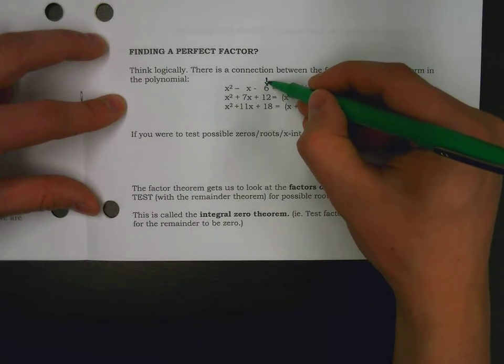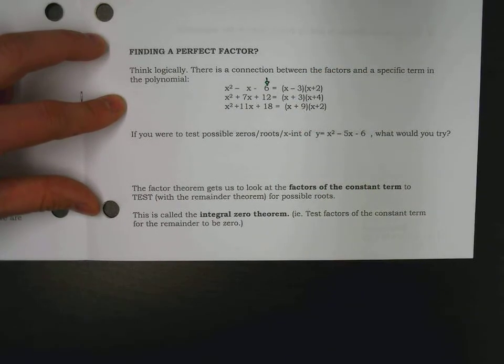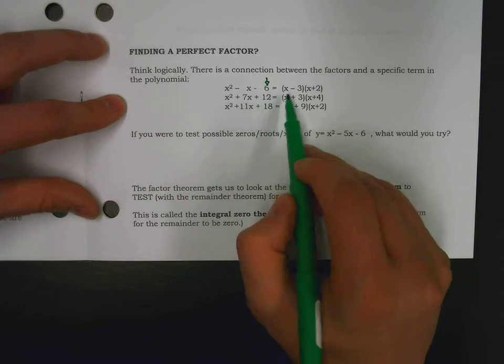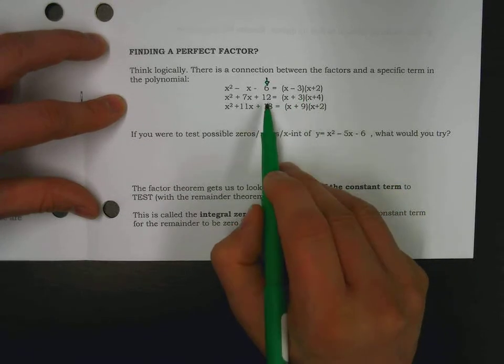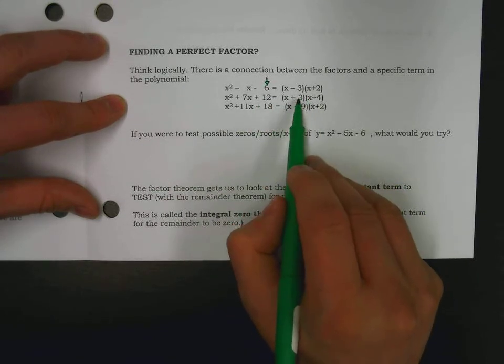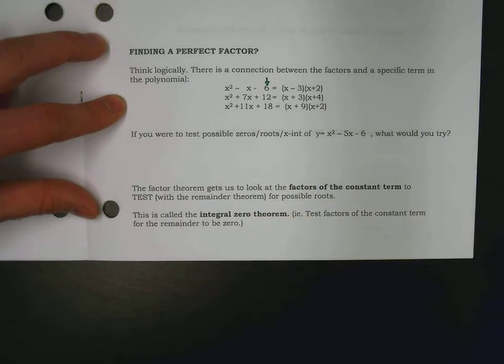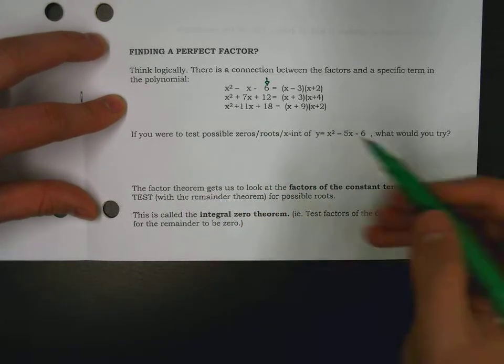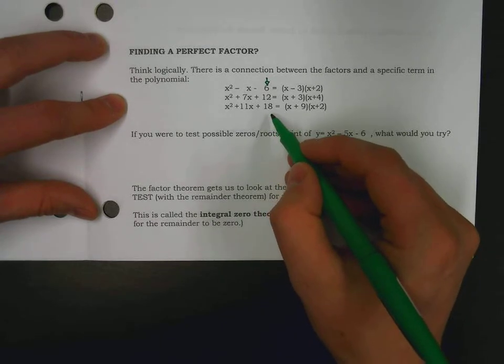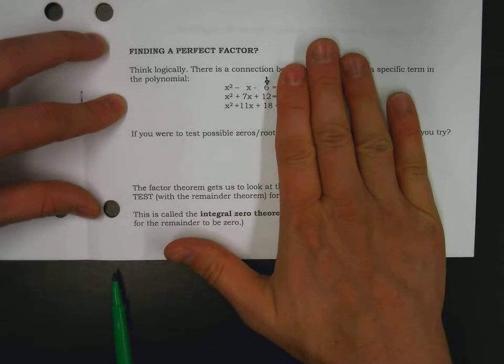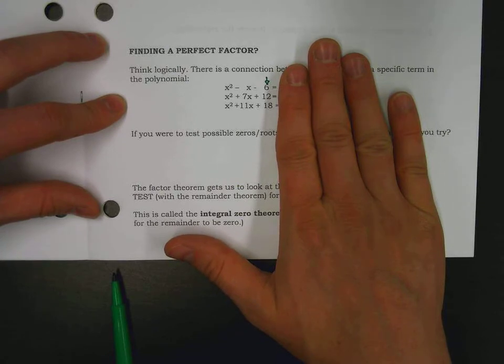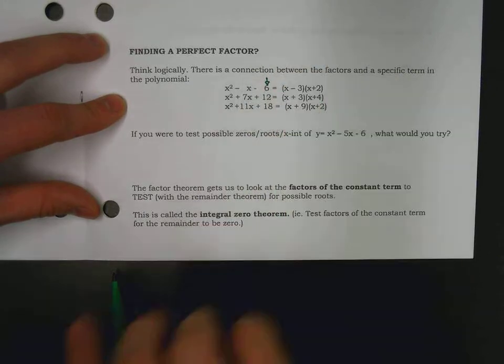There is a connection between the factors and a very specific term in the polynomial. Namely, this last value in a quadratic is created from a negative three times a two. That twelve is created from a three and a four. The eighteen is created from a nine and a two. Those are very important locations as we start to say, what could the factors be? And we're going to start with that constant term to figure out some potential factors.